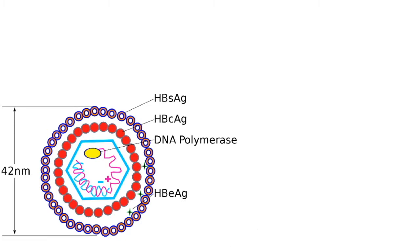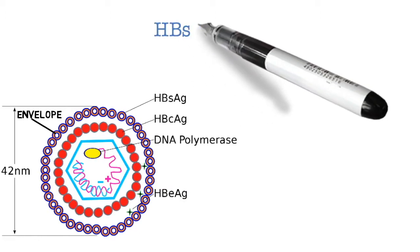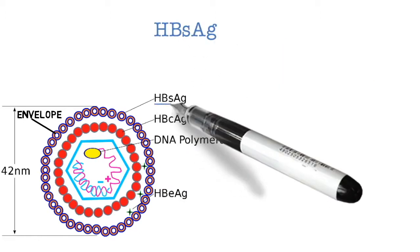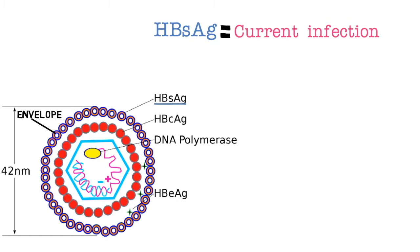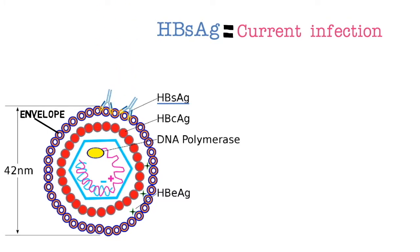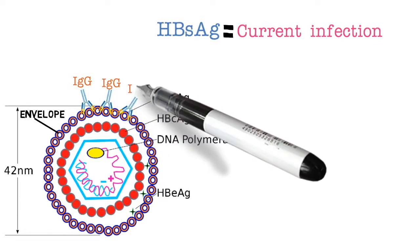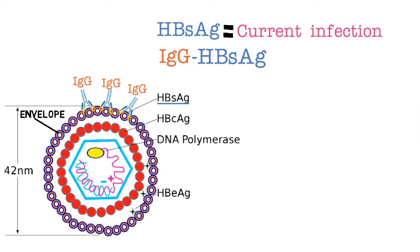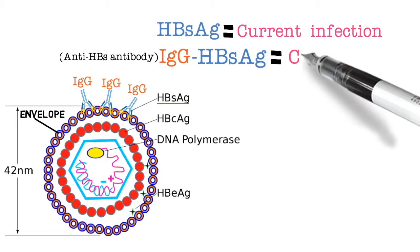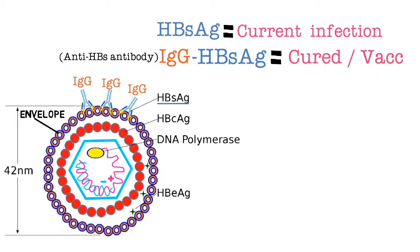Pay attention to the envelope, because here we have hepatitis B surface antigen. If you see hepatitis B surface antigen, this equals a current infection — period. Now, IgG antibodies to hepatitis B surface antigen are what we're trying to make, because if you see anti-HBs antibody, this equals a cured or vaccinated patient.